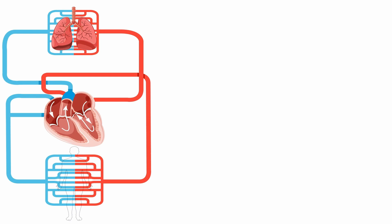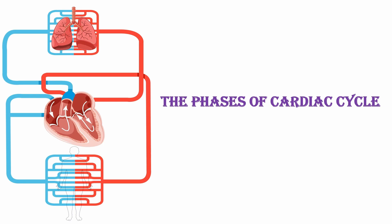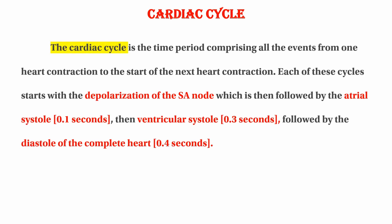In this video, we will talk about the phases of the cardiac cycle. The cardiac cycle is the time period comprising the events from one heart contraction to the start of the next heart contraction.